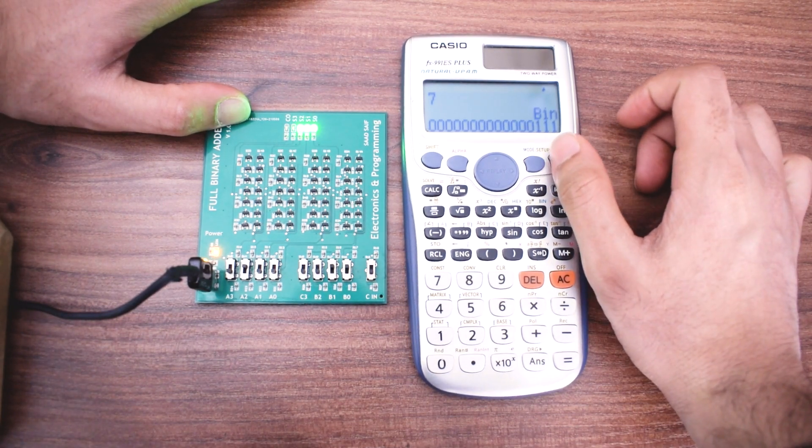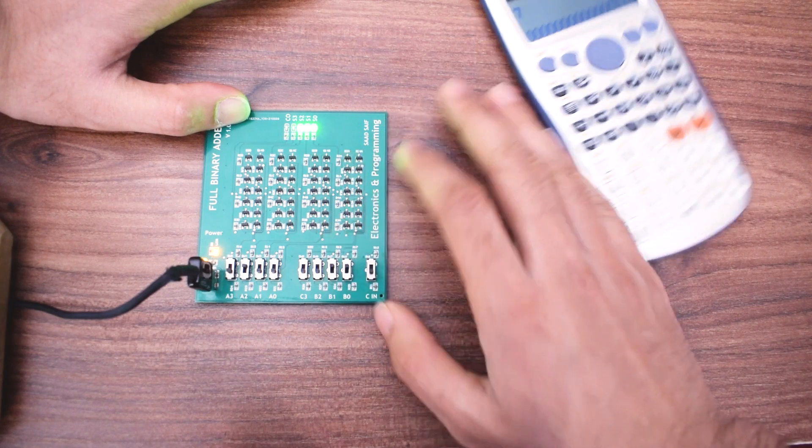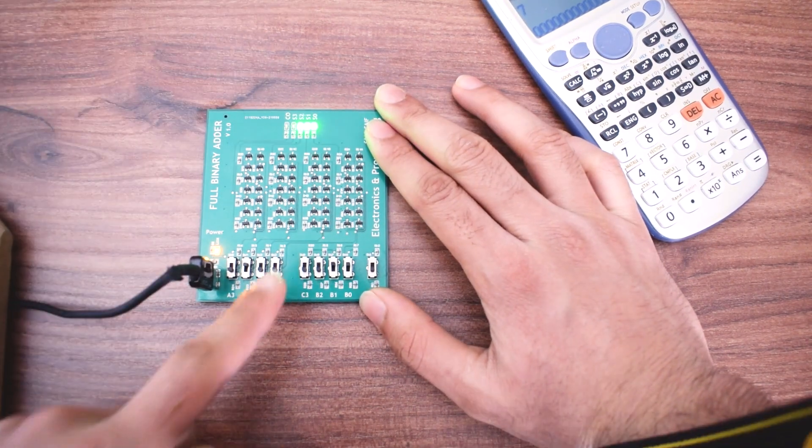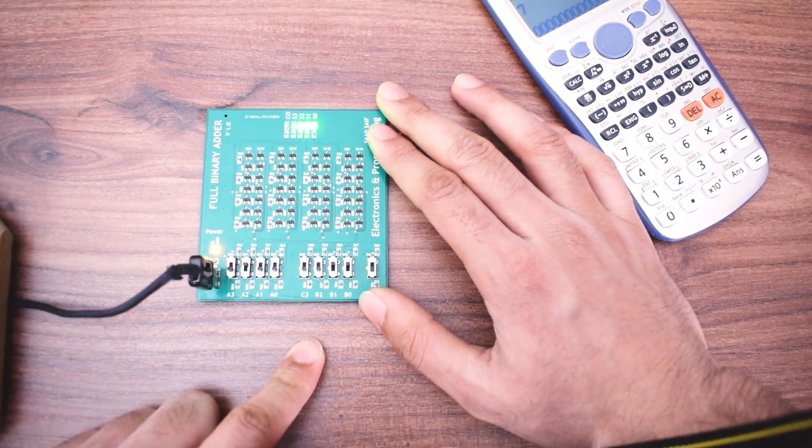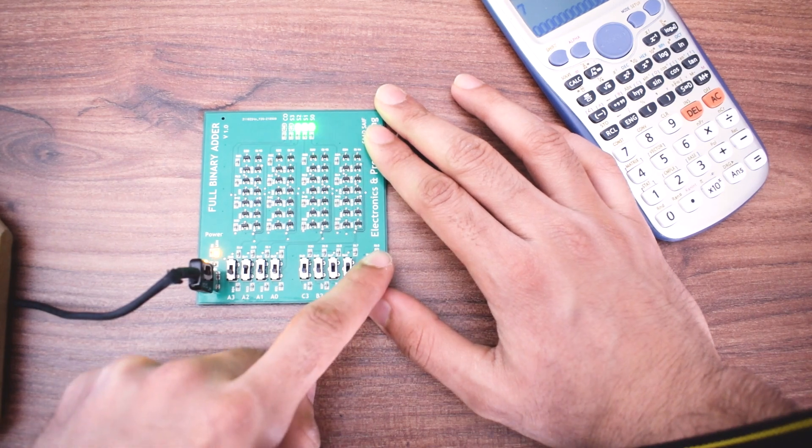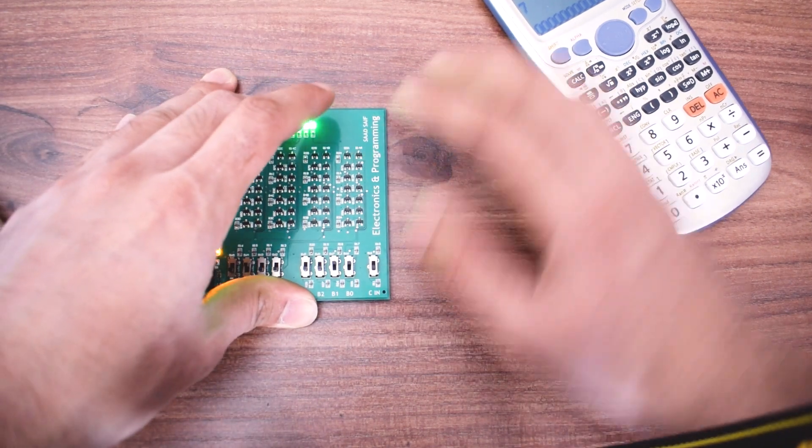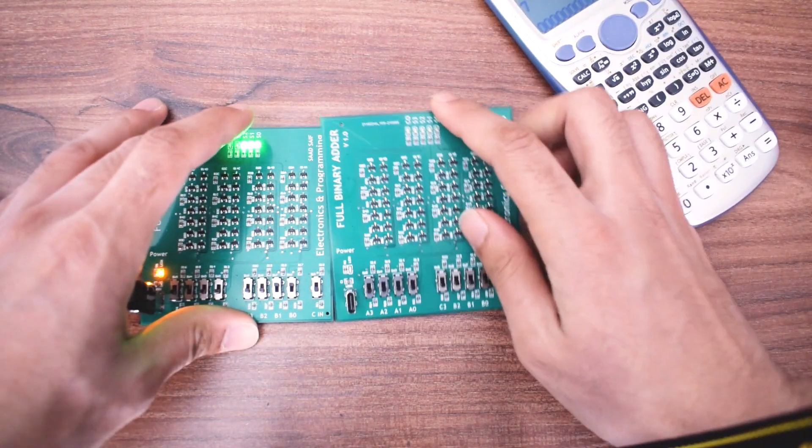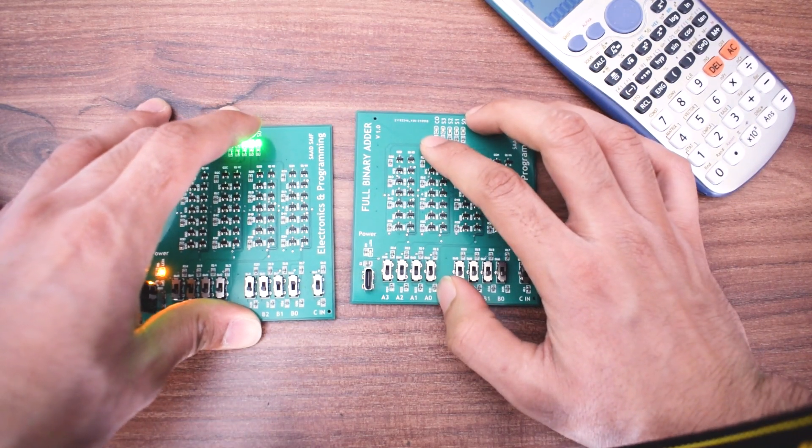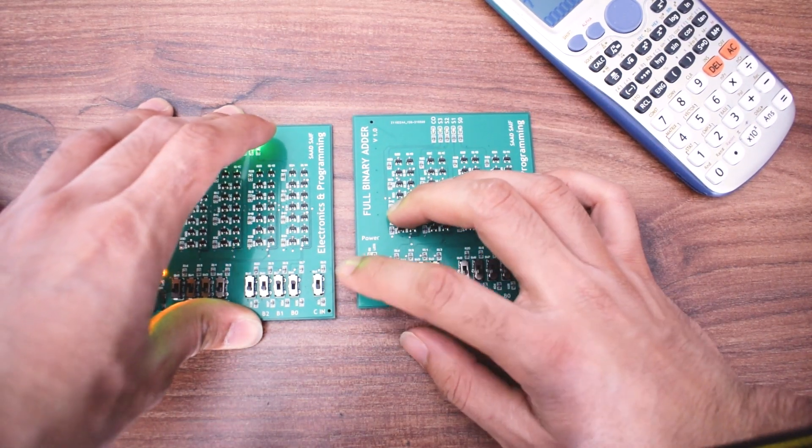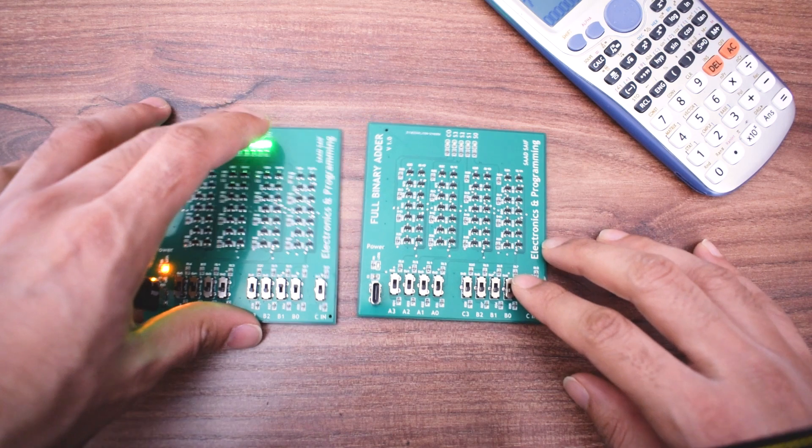So yeah, then let's talk about some of the limitations of this. Obviously we can only add 4-bit numbers, but as I mentioned previously you can actually combine two of these modules together like this and you can just take the carry out from here, pass it in here, and then you can add 8-bit numbers.